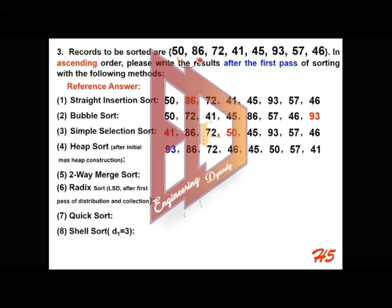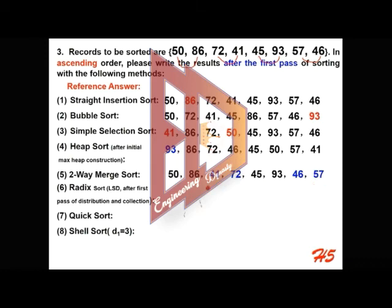The next method is two-way merge sort. We compare each two adjacent records and put them in ascending order. The result after the first pass of two-way merge sort: the first pair is sorted to 58, the second pair is exchanged, then the third pair, and then the last pair. This is the result after the first pass of merge sort.